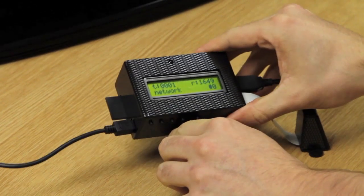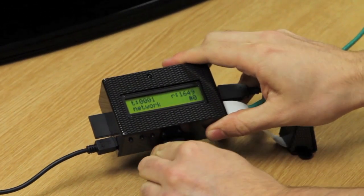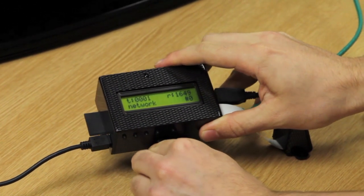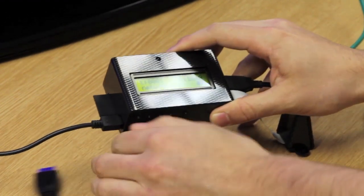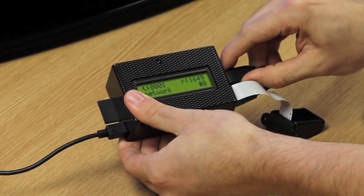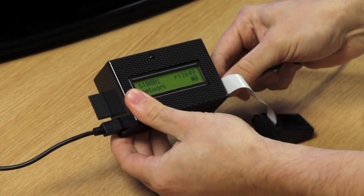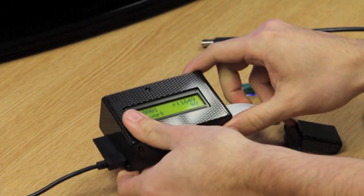The great thing about the Pi Face control and display is that you don't need an HDMI cable, USB keyboard, or Ethernet cable to control your Raspberry Pi.